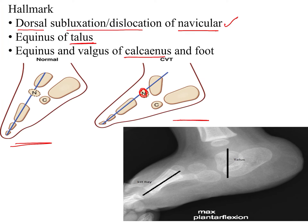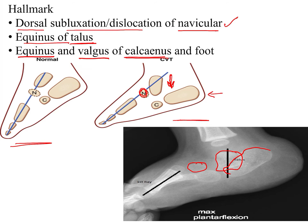When we look at the talus, there is equinus of the talus — the talus has gone into an equinus deformity. Third is the calcaneum, which has two deformities: equinus and valgus. The equinus deformity of the calcaneum is not as marked as the equinus deformity of the talus. So we have dorsal subluxation of the navicular, equinus of the talus, and equinus plus valgus of the calcaneum.